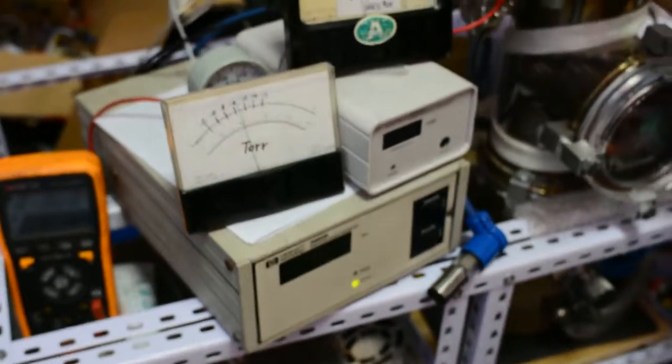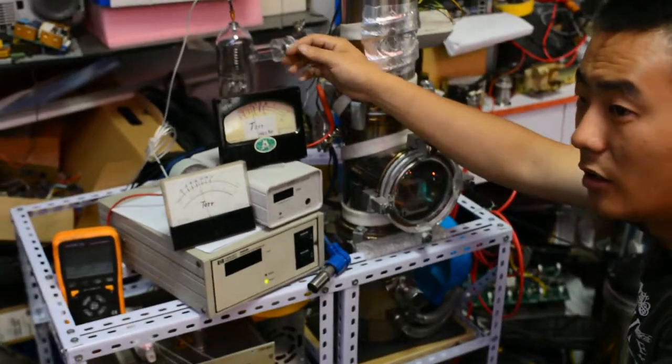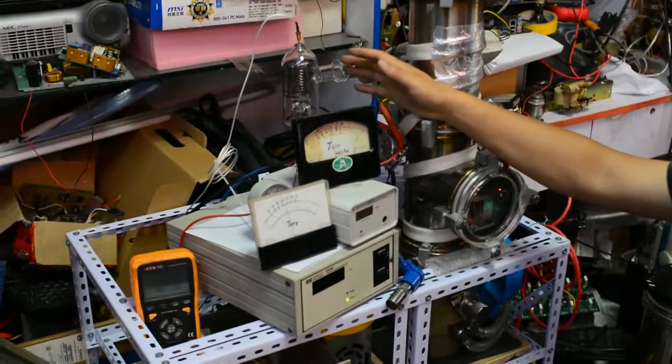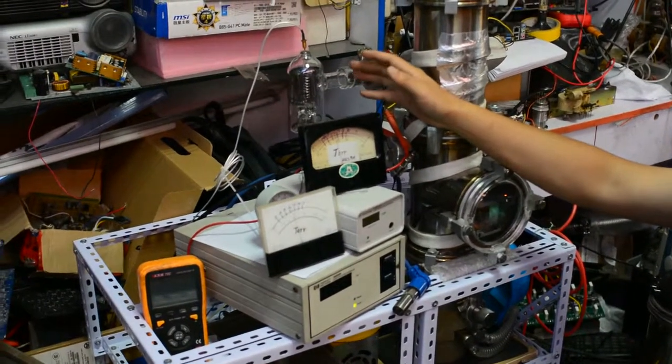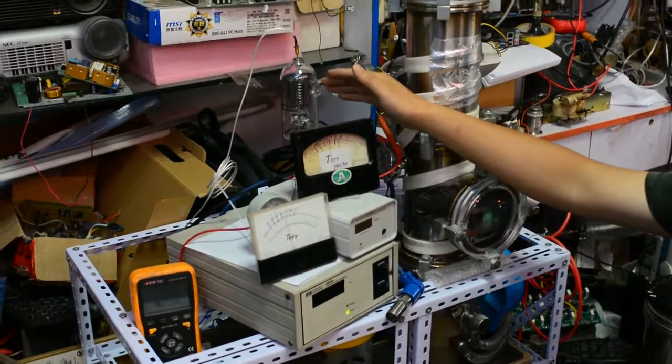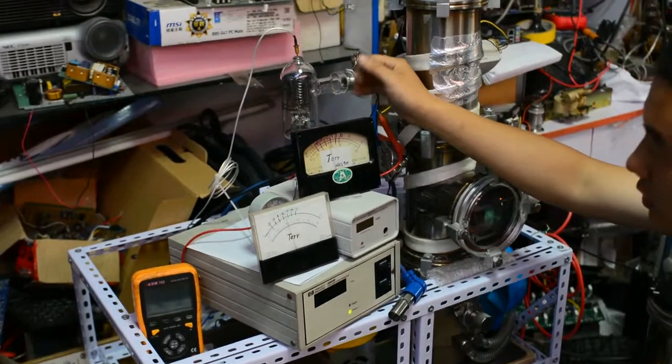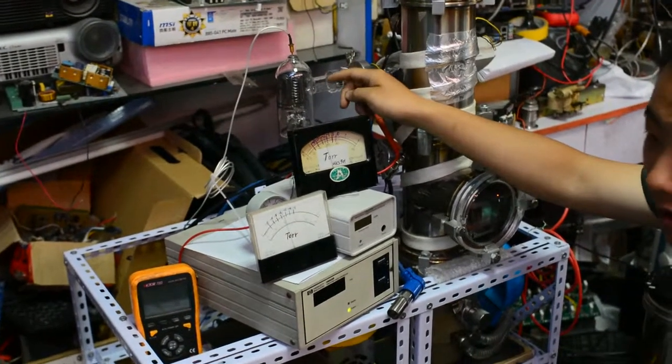Basically, the degas power supply will apply a voltage of about 5 volts and 10 amps to the ion gauge grid. It will heat it up very very rapidly.